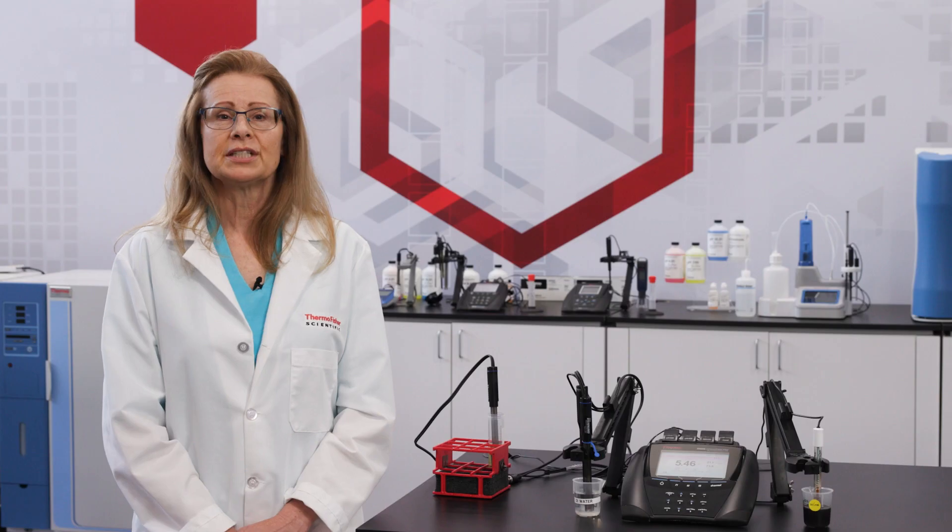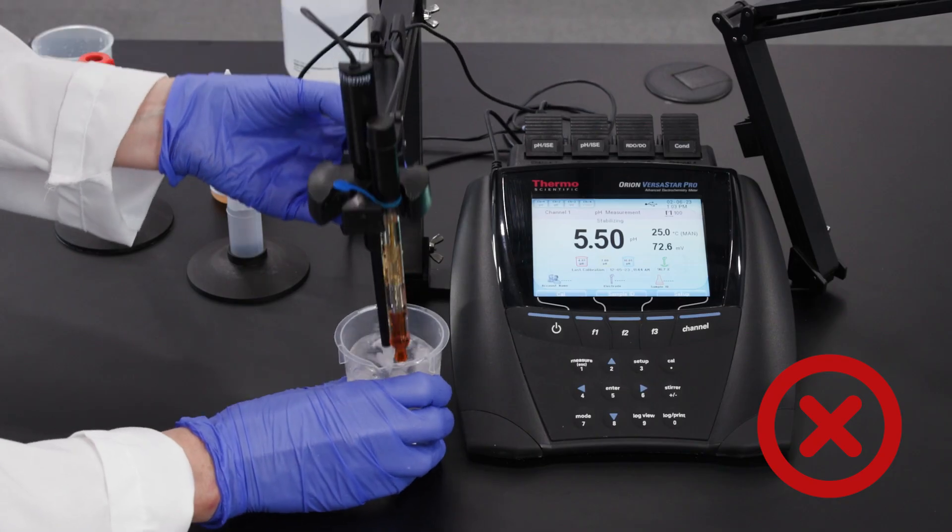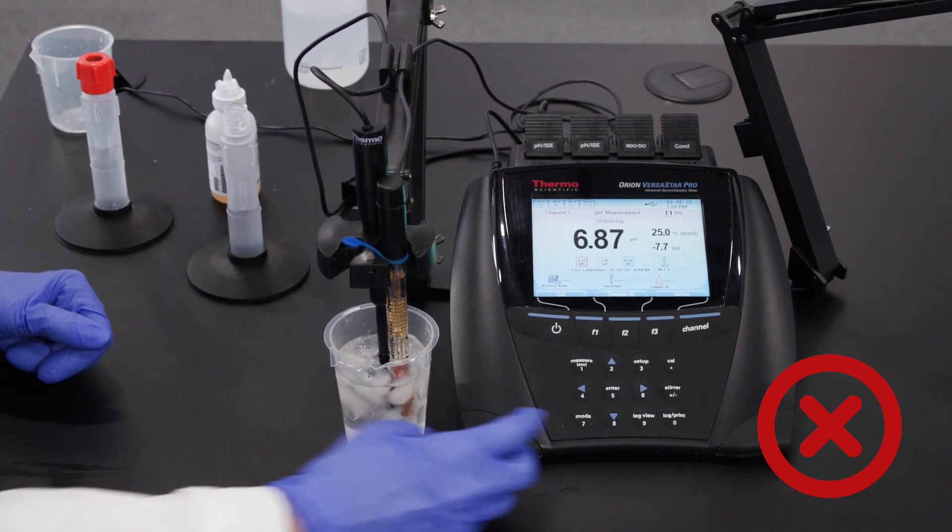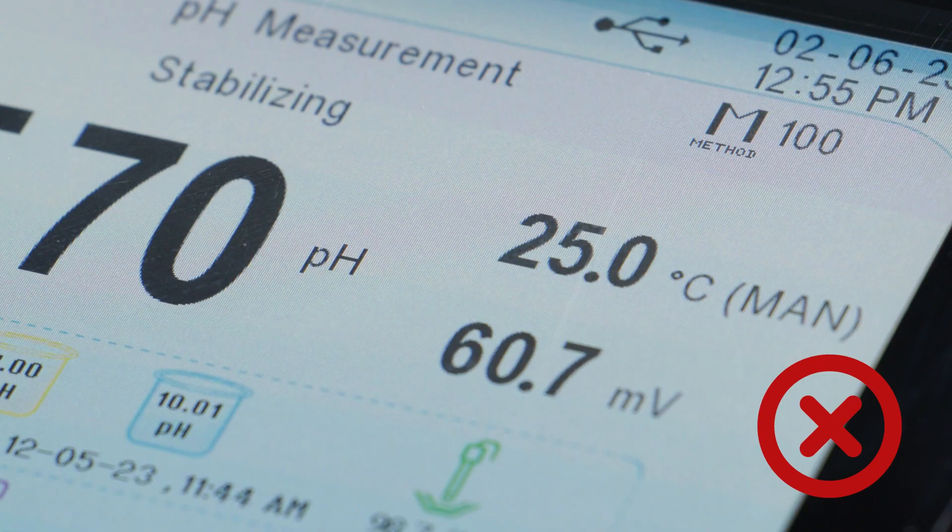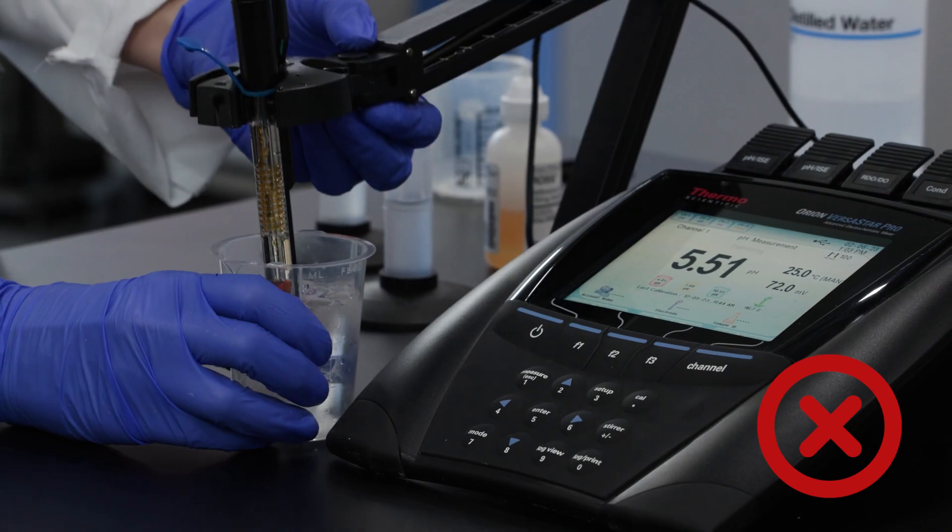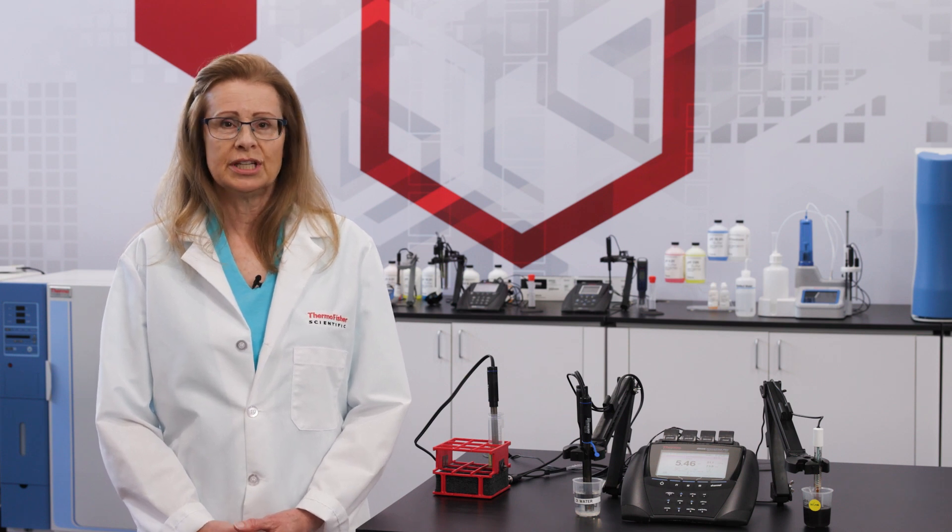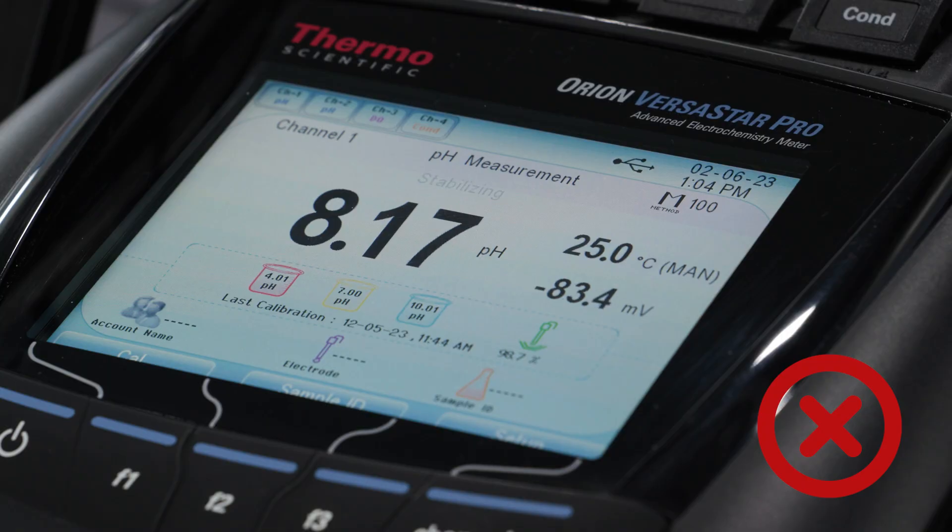Failure to correct temperature can degrade the accuracy of pH readings. Examples include not using an automatic temperature compensation ATC probe or triode electrode, leaving the temperature set to a manual 25 degrees C, and not measuring the sample temperature. Temperature can change the value of the pH buffers interfering with the calibration. Temperature also changes the slope of the electrode, causing it to be incorrect.